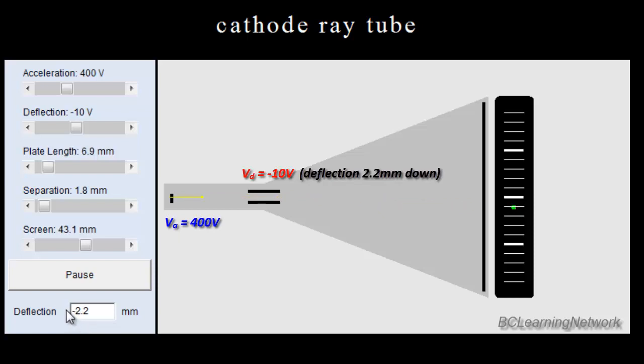And what we want to do is use the simulation to see what the relationship is between the deflecting voltage and our deflection, our final deflection. So let's go back to our positive. We see our deflection is 2.2 millimeters.